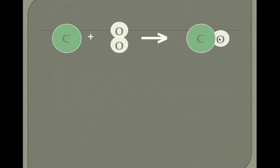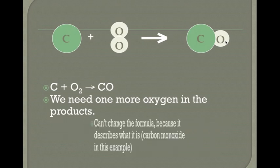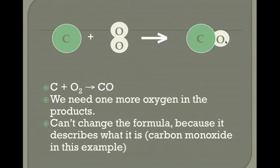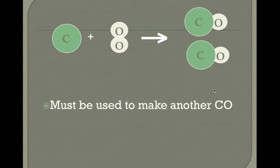But what if it's not balanced? Looking at this equation, we have carbon reacting with oxygen gas and it produces carbon monoxide. We see there's a carbon on each side, but on the reactants we have two oxygens and on the product we only have one oxygen. We need one more oxygen in the products. We cannot just change the formula — we can't change CO to CO₂ because that changes what the substance is. It's carbon monoxide.